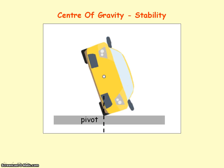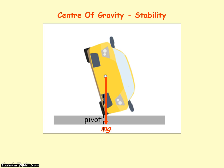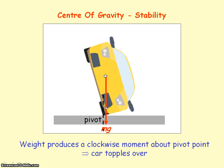In the case where the car is on two wheels, it's stable because the weight of the car is acting along the pivot point, so it's balanced. However, in another case, the weight of the car is producing a clockwise moment about the pivot point, so the car will topple over.